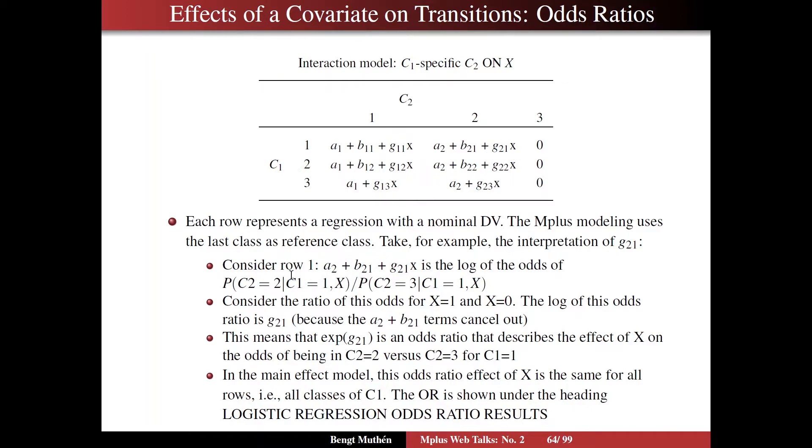So we look at row 1, and that expression a2 plus b21 plus g21X. It's the log of the odds of probability of C2 being in class 2, given the first row in X, relative to C2 being in class 3, the last class, for that row in X. Now we're going to consider the ratio of this odds for X equals 1 and X equals 0, corresponding to poverty.